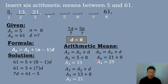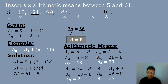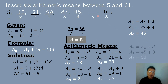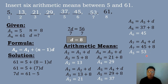Again, repeating the steps: 21 plus 8 equals 29. To get the fifth term, add the fourth term 29 plus 8, which equals 37. To get the sixth term, add the fifth term plus the common difference: 37 plus 8 equals 45. To get the seventh term, add the sixth term 45 plus the common difference 8, so 45 plus 8 equals 53.